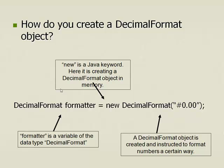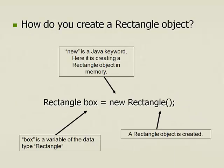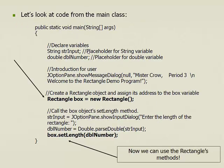Same for DecimalFormat — we have our DecimalFormat class, and right here we're creating an object called 'formatter' using this blueprint. The Java keyword 'new' says to create a new one. Likewise, here's our rectangle object — 'new' is the Java keyword, and we're creating a new rectangle object. 'box' is the variable of the data type Rectangle, so 'box' is the name of our new object. Using the rectangle class, we say: Rectangle box = new Rectangle(). Then we have access to those methods, so we can say box.setLength() and set the length of the box object.